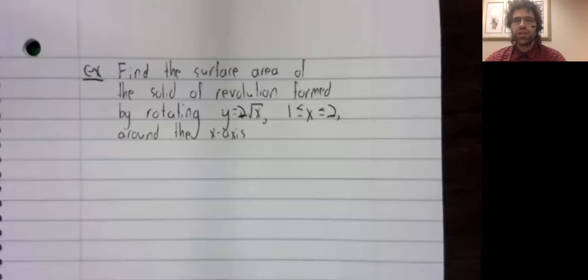Find the surface area of the solid of revolution formed by rotating y equals 2 times the square root of x, where x ranges from 1 to 2 around the x-axis.